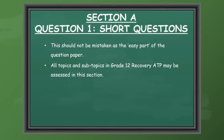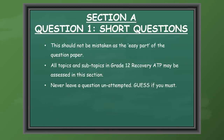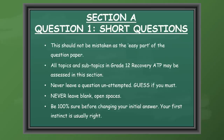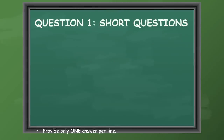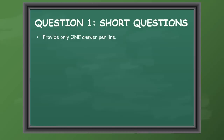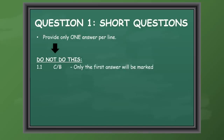Section A will be the short questions and this should not be mistaken as the easy part of the question paper. All topics and subtopics in Grade 12 Recovery ATP may be assessed in this section. Never leave a question unattempted, so guess if you must. Never leave blank open spaces. Be 100% sure before changing your initial answer as your first instinct is usually the correct one. Provide only one answer per line. Do not write C/B as only the first answer will be marked.